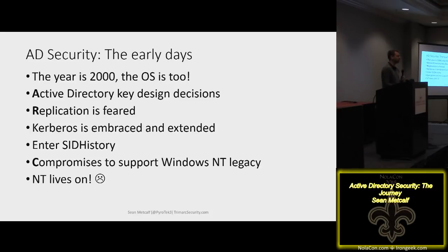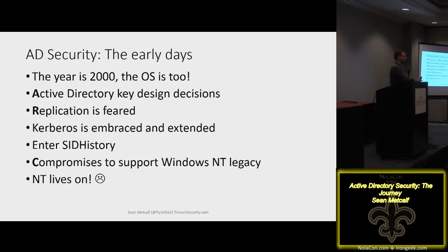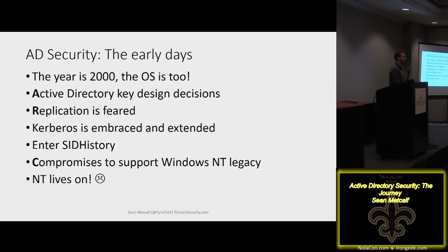Replication was really feared because links at the time were T1 or worse. Microsoft tamped down replication and didn't allow many attributes — like last logon time — to replicate across all domain controllers. Initially, to find when someone last logged on, you'd have to hit every domain controller. In the 2003 timeframe they added an attribute that replicated everywhere. Compromises were made, including SID history to enable migration from NT to Active Directory.